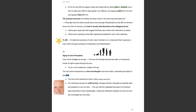Aging and color perception. Color vision changes as we age. The lens will normally become less clear, so it becomes harder for light to pass through the eyes — lens transparency changes with age. The lens loses transparency to short wavelengths more than others, decreasing the ability to see blue. The loss of sensitivity to blue is slow and usually unnoticed. If an individual receives an artificial lens, changes become noticeable, as typically eyes are operated one at a time. The eye with the implanted lens gives the individual clear transmission of short wavelengths, making the distinction between the new lens and the unchanged eye very clear.